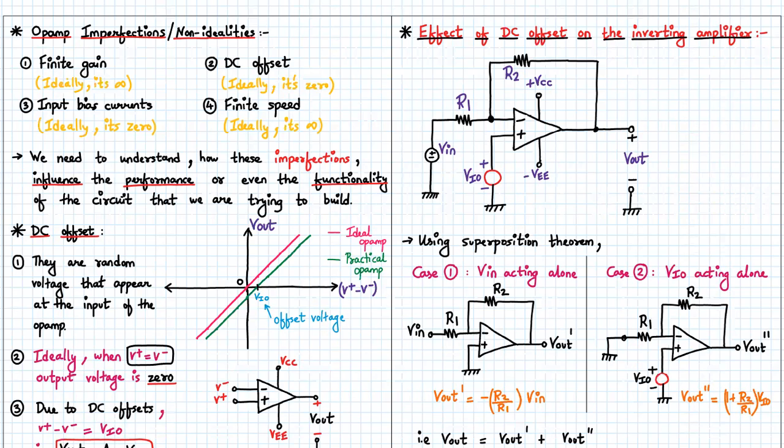Third is input bias current, ideally zero, and fourth is finite speed, ideally we consider it to be infinite.